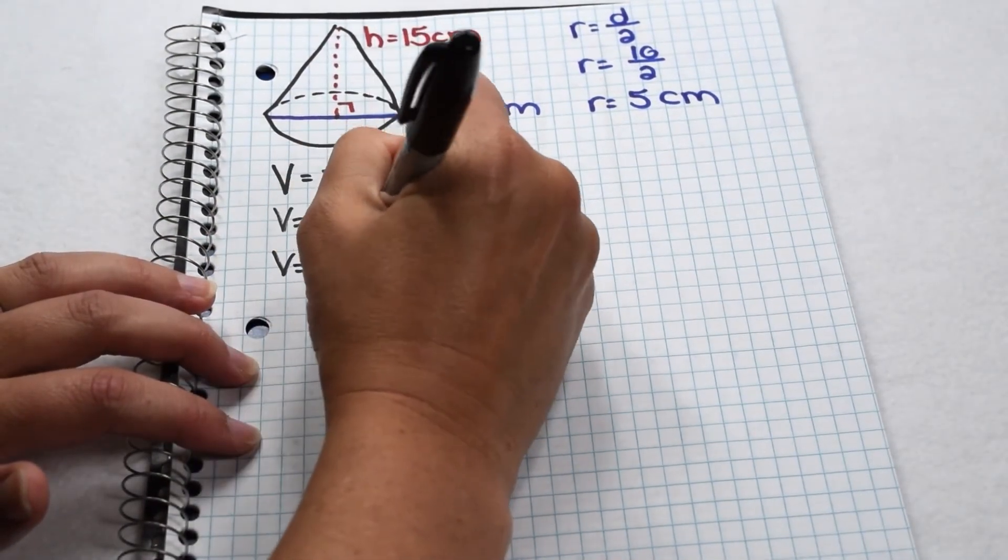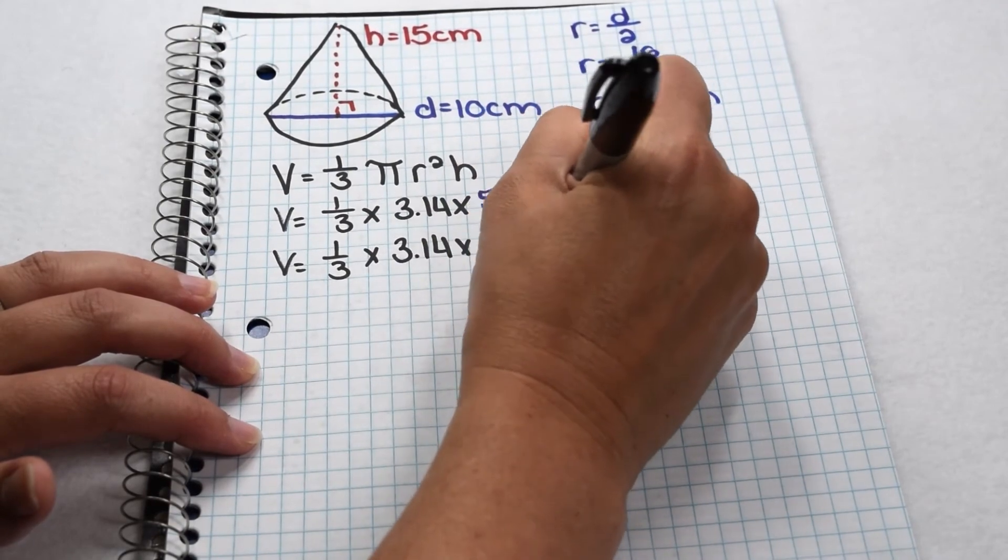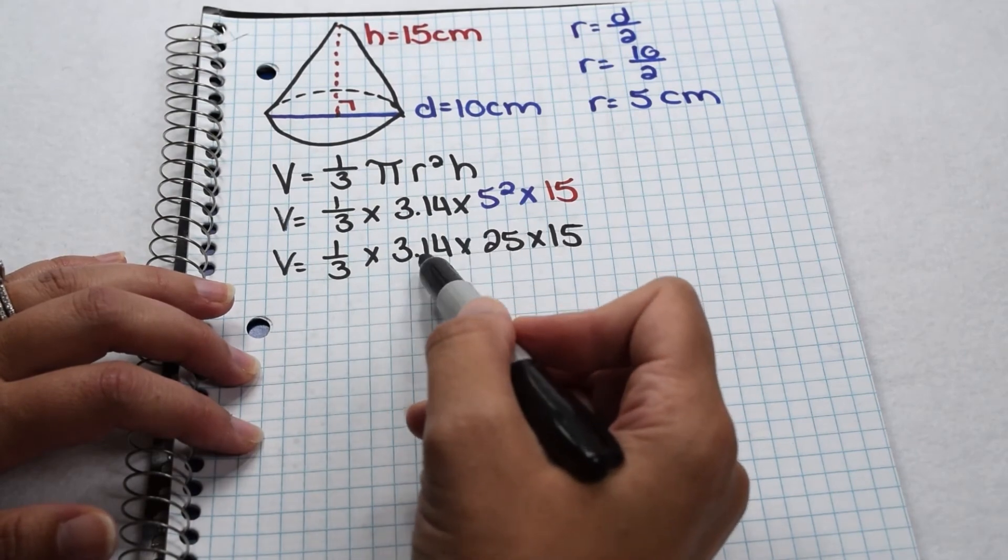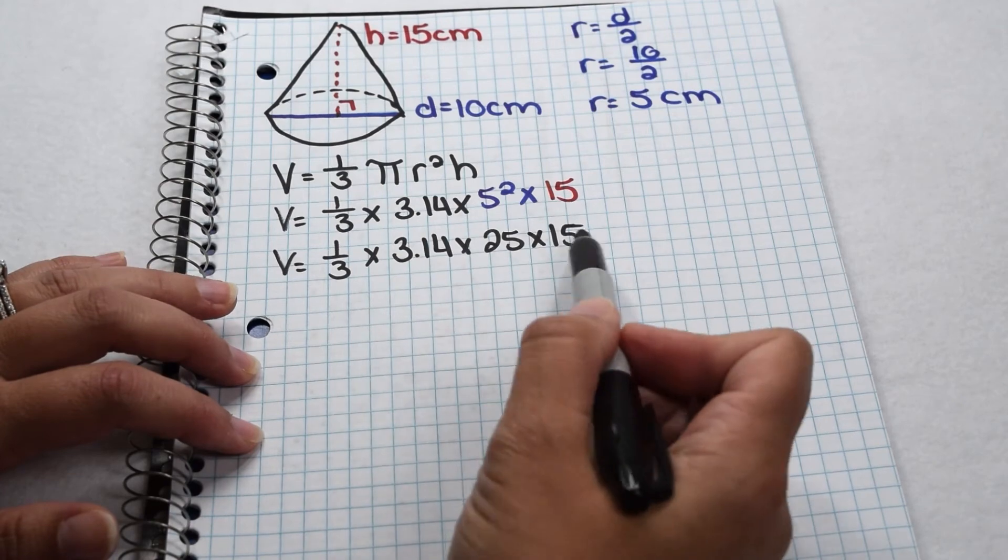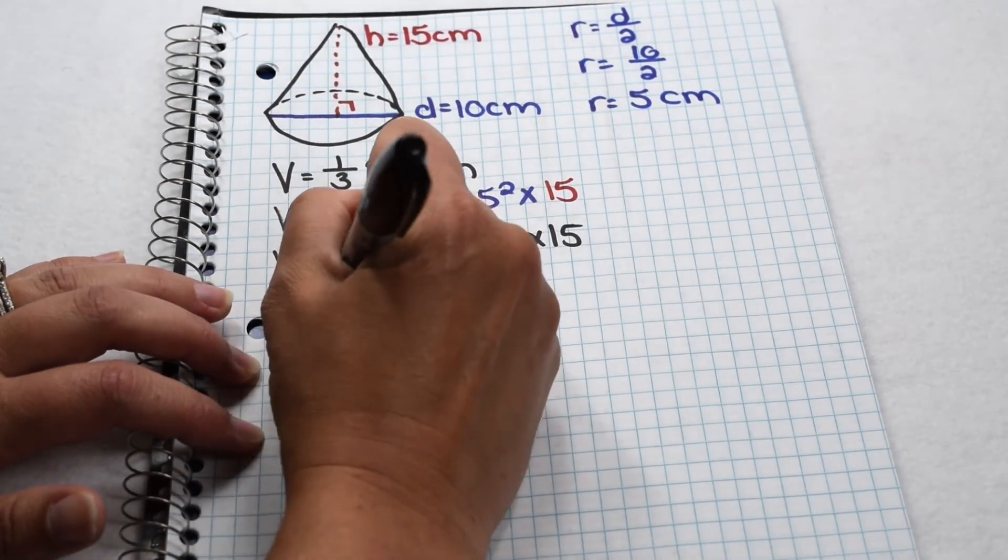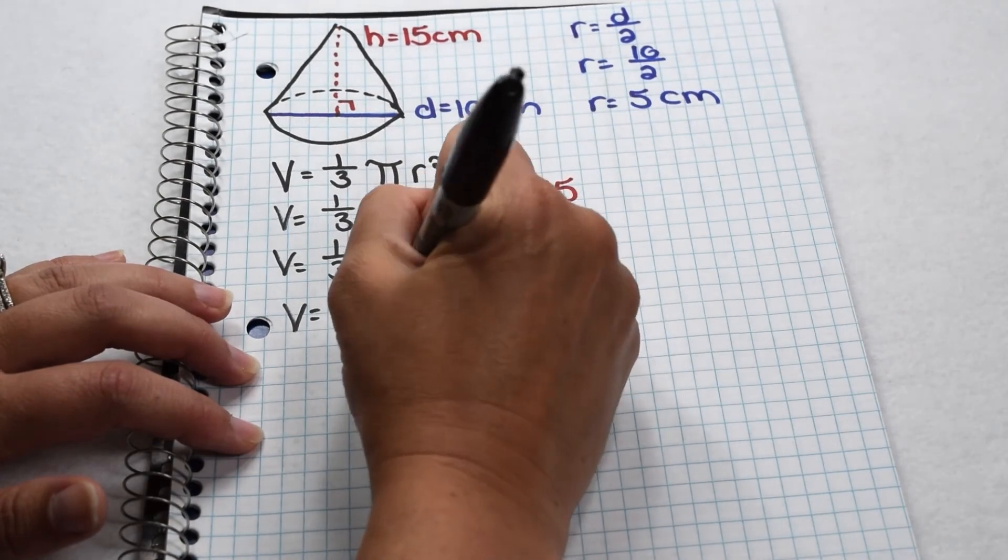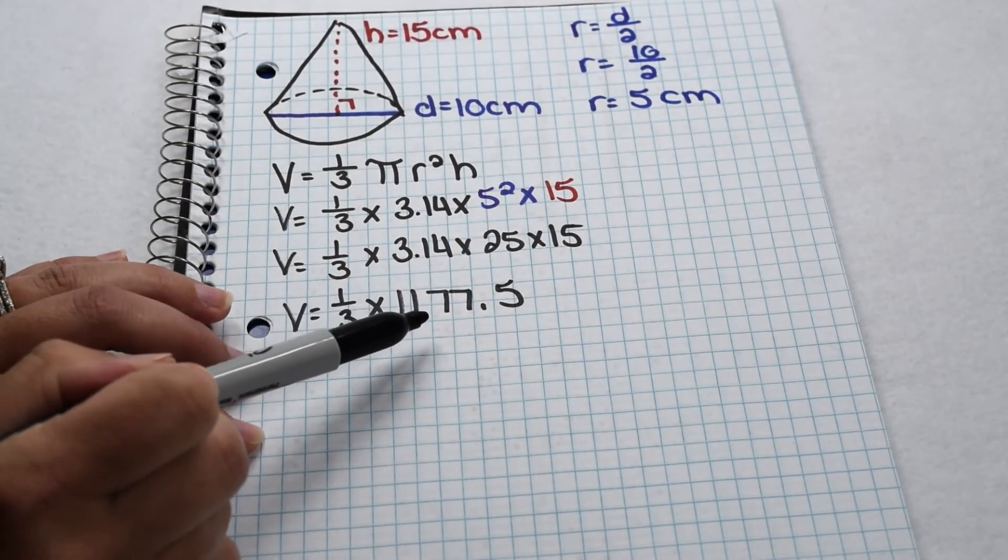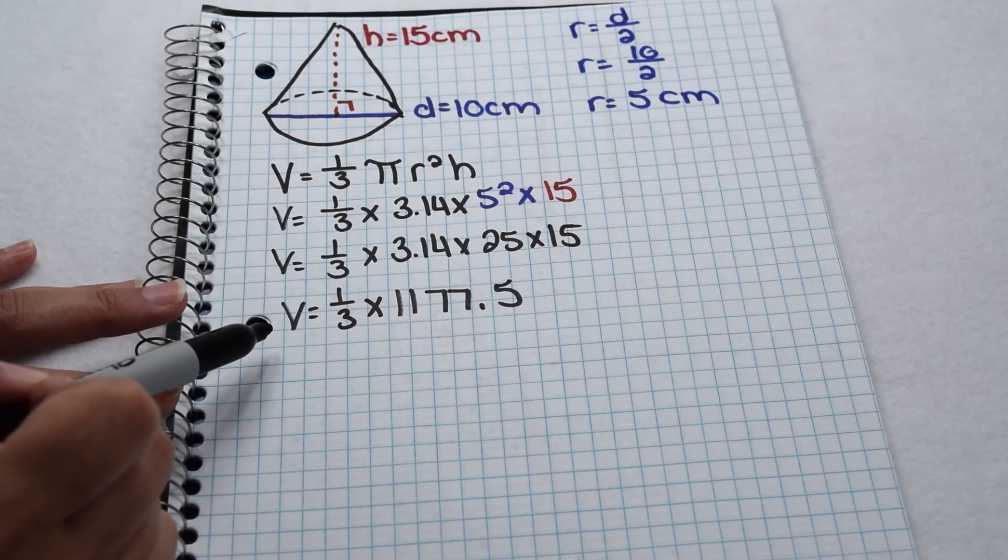Order of operations tells us that we need to do exponents first. So we have one-third times 3.14 times 25 times 15. Now we know we can multiply in any order. But in this case, instead of going left to right, we're going to do the 3.14 times 25 times 15 first. In other words, we're going to find that corresponding cylinder part first and then pick up the one-third. So 3.14 times 25 times 15 comes out to be 1,177.5. That would be the volume of the entire cylinder.